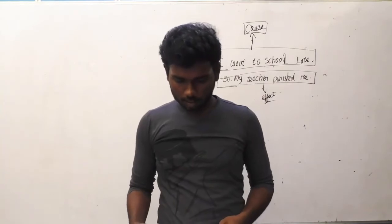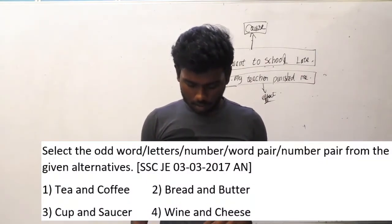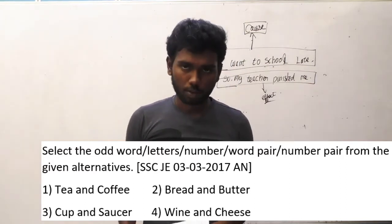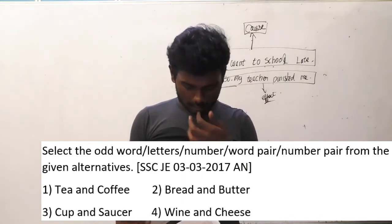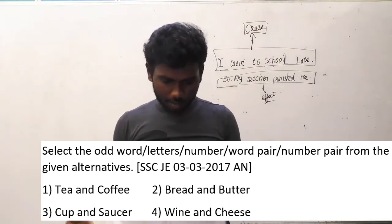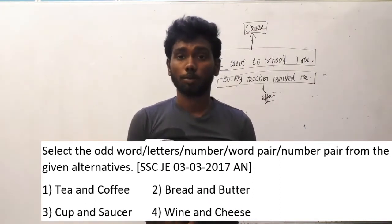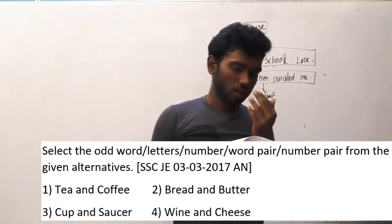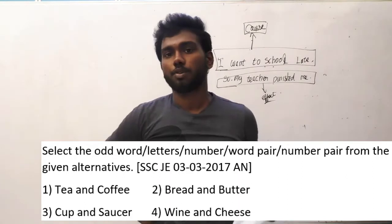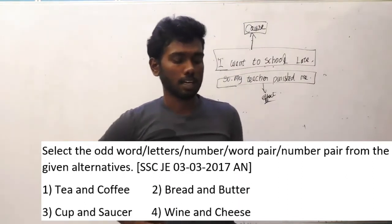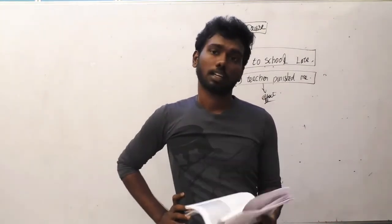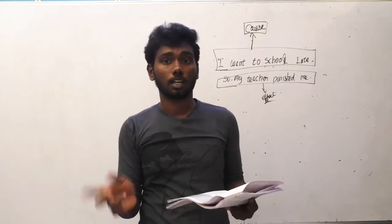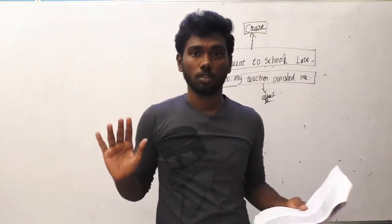The 35th question from SSCJE 3-3-2017 afternoon: select the odd word pair. Options are tea and coffee, bread and butter, cup and saucer, wine and cheese. If you look carefully, tea/coffee, bread/butter, and wine/cheese are all edible things. Cup and saucer alone is not edible — it is a material object. So cup and saucer is the odd one out and the answer is option C.